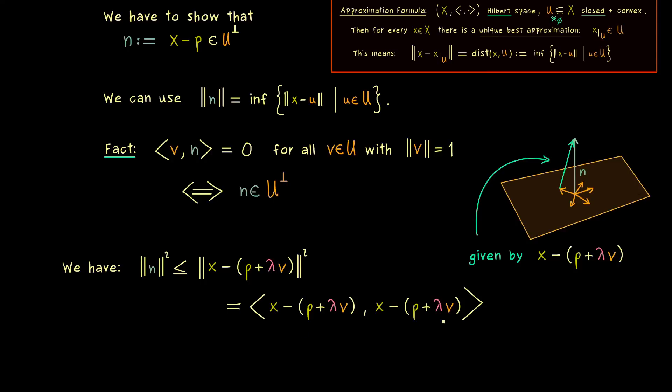However, as you might have already seen, we can simplify the vector here, because x minus p is given as n. And then this makes everything shorter, because we only have two vectors in our inner product. And now as already mentioned, we can use the linearity to transform this one inner product into four parts.